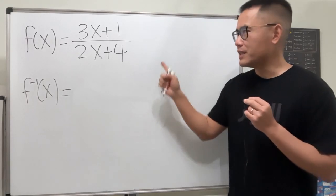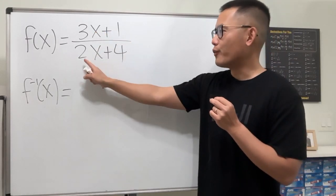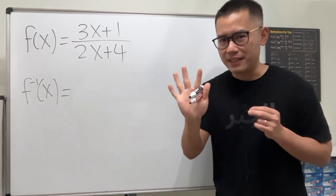I'm going to show you guys how to find the inverse for this function, 3x plus 1 over 2x plus 4 in 5 seconds.